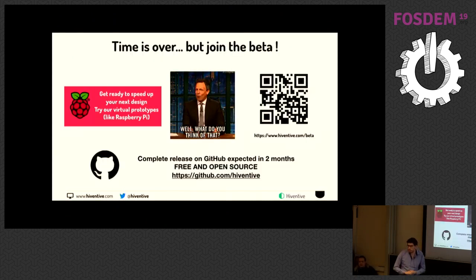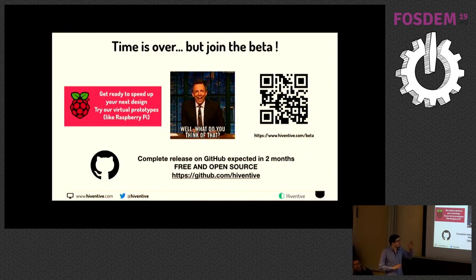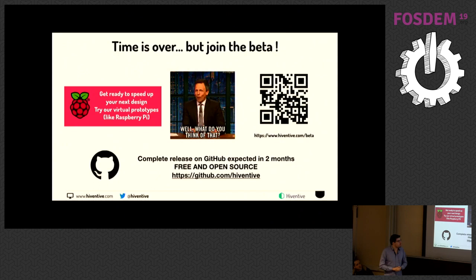Time is over, but we are currently opening a beta next week including the virtual prototype of Raspberry Pi. If you want to try, just join the beta. After the beta, we will open everything to the community on our GitHub at github.com/eventive. If you want to try or give us feedback with the Raspberry Pi, we will be happy to receive your feedback. Thank you.